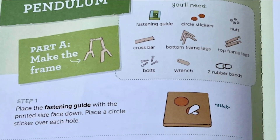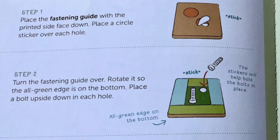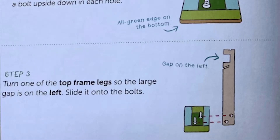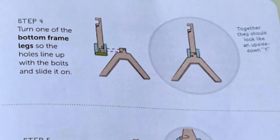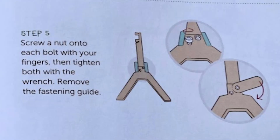Step one: place the fastening guide with the printed side face down. Place a circle sticker over each hole, then turn it over and rotate it so the all-green edge is on the bottom. Then place a bolt upside down in each hole. Step three: turn one of the top frame legs so the large gap is on the left and slide it onto the bolts. Step four: turn one of the bottom frame legs so the holes line up with the bolts and slide it on — together they should look like an upside-down one. Step five: screw a nut onto each bolt with your fingers, then tighten both with the wrench. Remove the fastening guide.